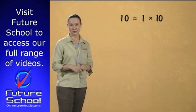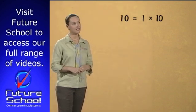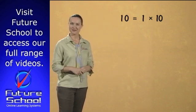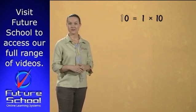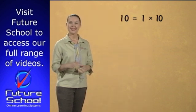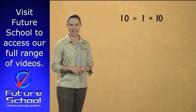10 is the first multiple, as 1 times 10 equals 10: 1 unit of 10 and 0 units of 1. If 10 is the first multiple of 10...